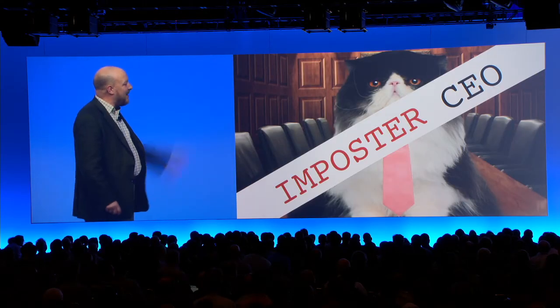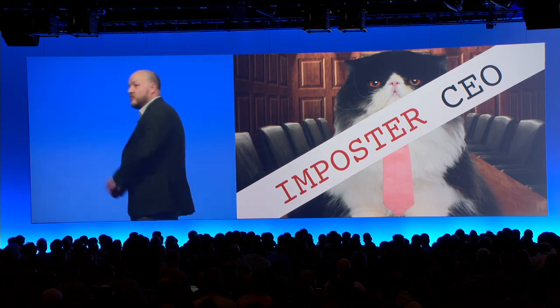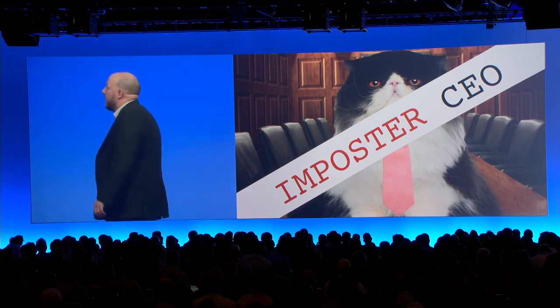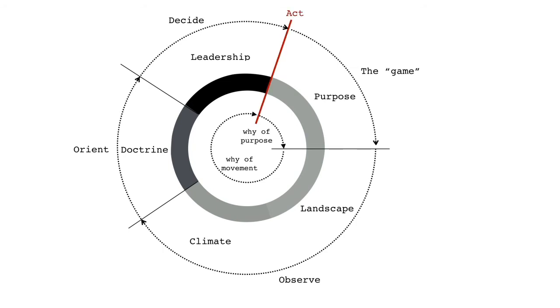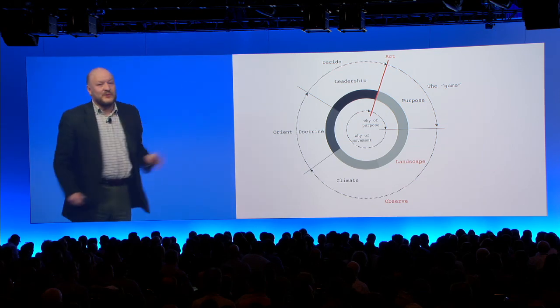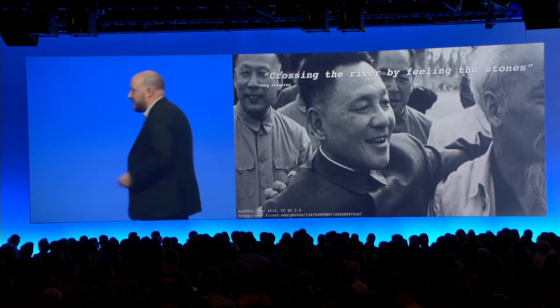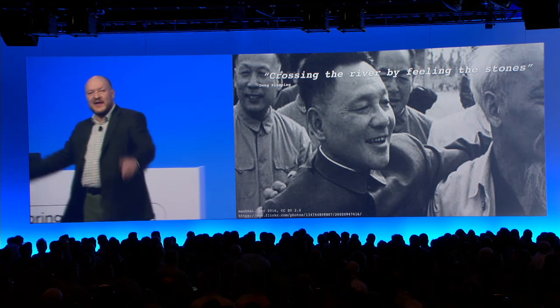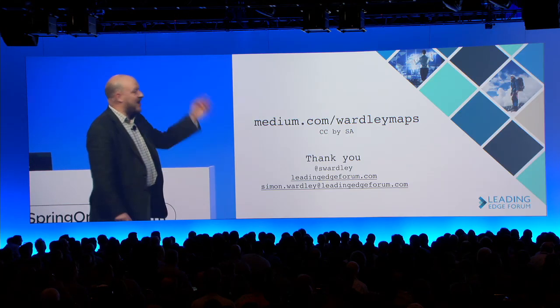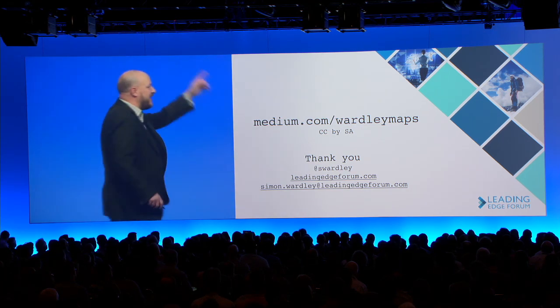So, a quick summary. If you are an imposter CEO, don't worry — there are lots of you, so it's okay. There is actually a method to understanding your landscape. It's important to act. The cycle: you not only understand your purpose and your landscape, it's important to act and iterate around that cycle. But as you do so, it's important to understand the landscape. It's summarized in the famous phrase: crossing the river by feeling the stones. Have a direction, small iterative steps, and observe the landscape as you go along. And at that point, I will say thank you very much. This is all Creative Commons — it's medium.com Wardley Maps. Help yourself. I've used it to build lots of businesses, save billions. Thank you very much.